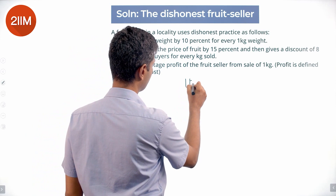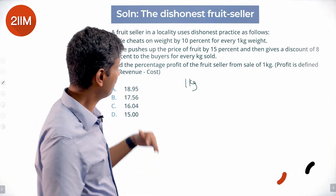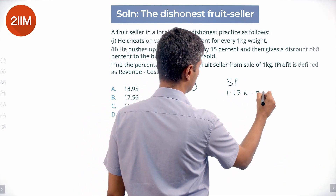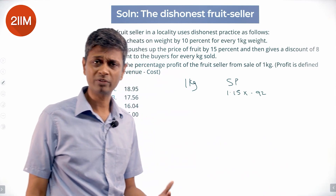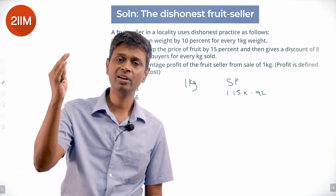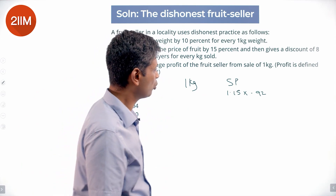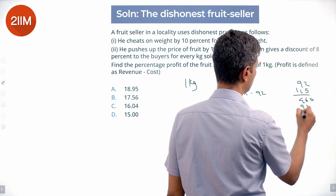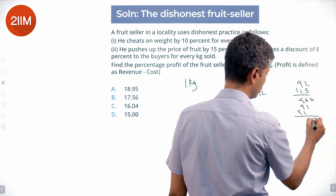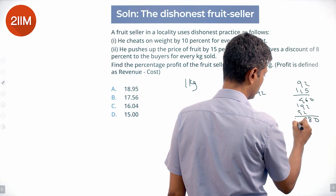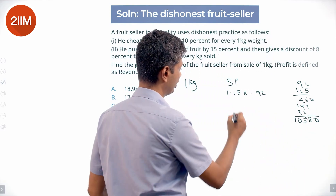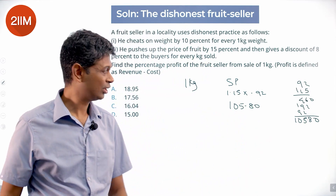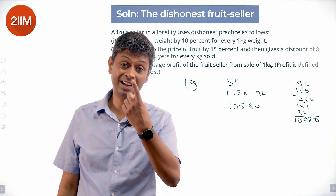For 1 kg, the selling price would be 1.15 × 0.92 — 15% markup and a discount of 8%. Let's compute: 92 × 1.15 gives us 105.80. This is his selling price. The cost price is claimed to be 1.